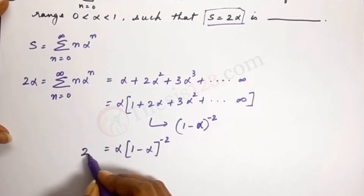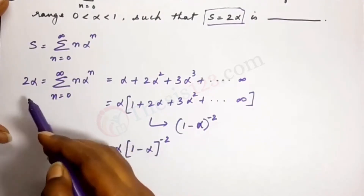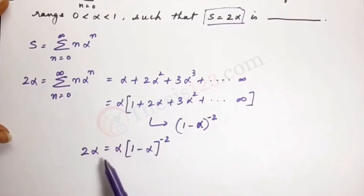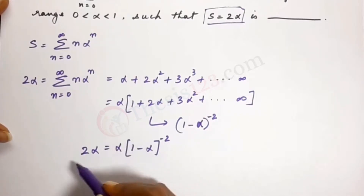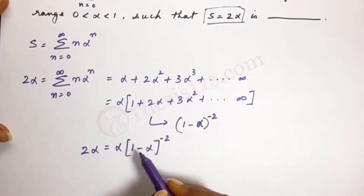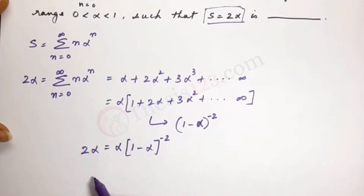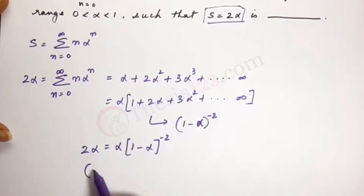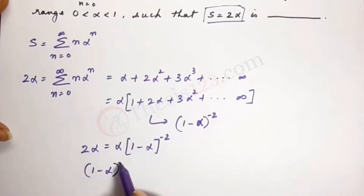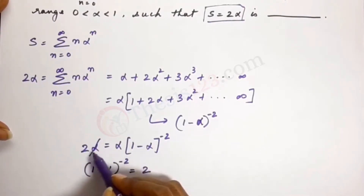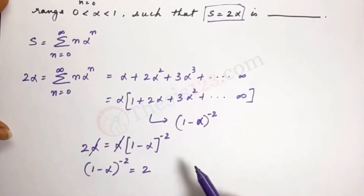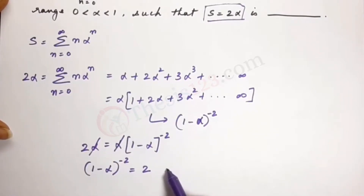So the expression becomes alpha times (1 minus alpha) to the power of minus 2, and this equals 2 alpha, which is the left-hand side. Dividing both sides by alpha, alpha cancels out, and we get (1 minus alpha) to the power of minus 2 equals 2.